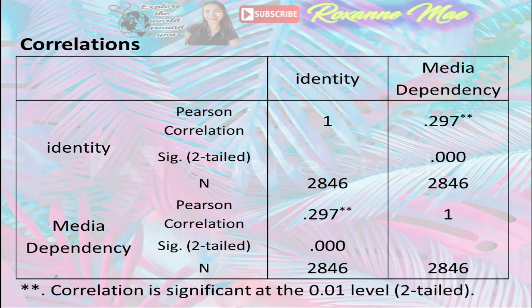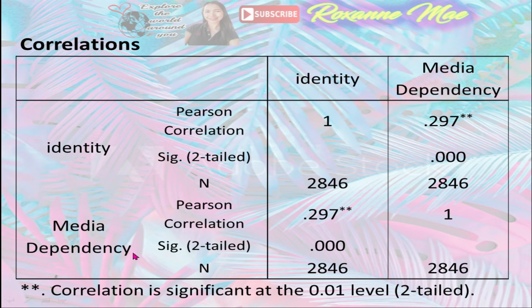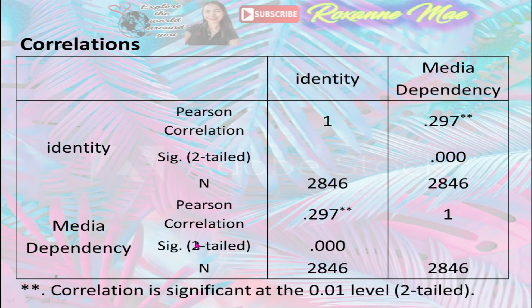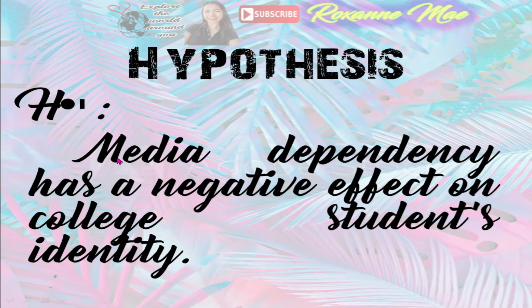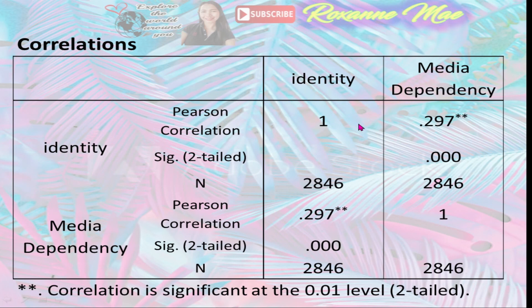In the Correlations table, we can notice the diagonal of 1s, which are perfect correlations between variables and themselves. The matrix is symmetrical on either side of the diagonal, meaning all correlations are given twice. The correlation coefficient for media dependency and identity is 0.297. For survey scale-type data, this is pretty large. The number of respondents is 2,846. The p-value is 0.000 — not technically zero, as SPSS does not give p-values beyond 3 decimal places. Because the p-value is less than 0.05, we reject the null hypothesis that media dependency has a negative effect on college students' identity, and conclude that there is no significant effect between media dependency and sense of identity among Judeans.